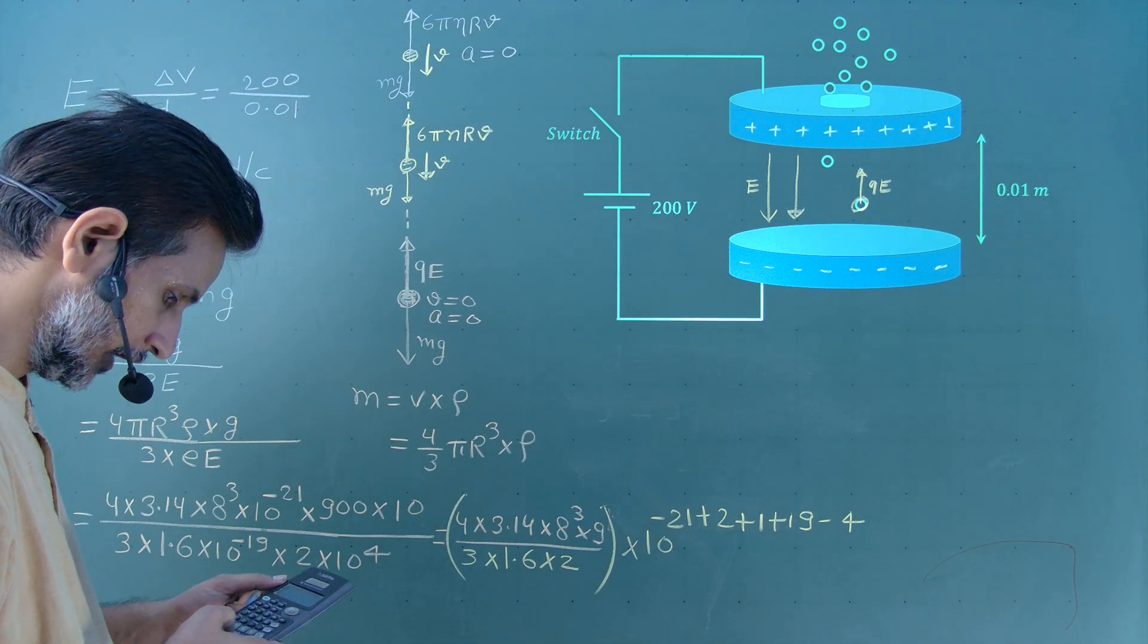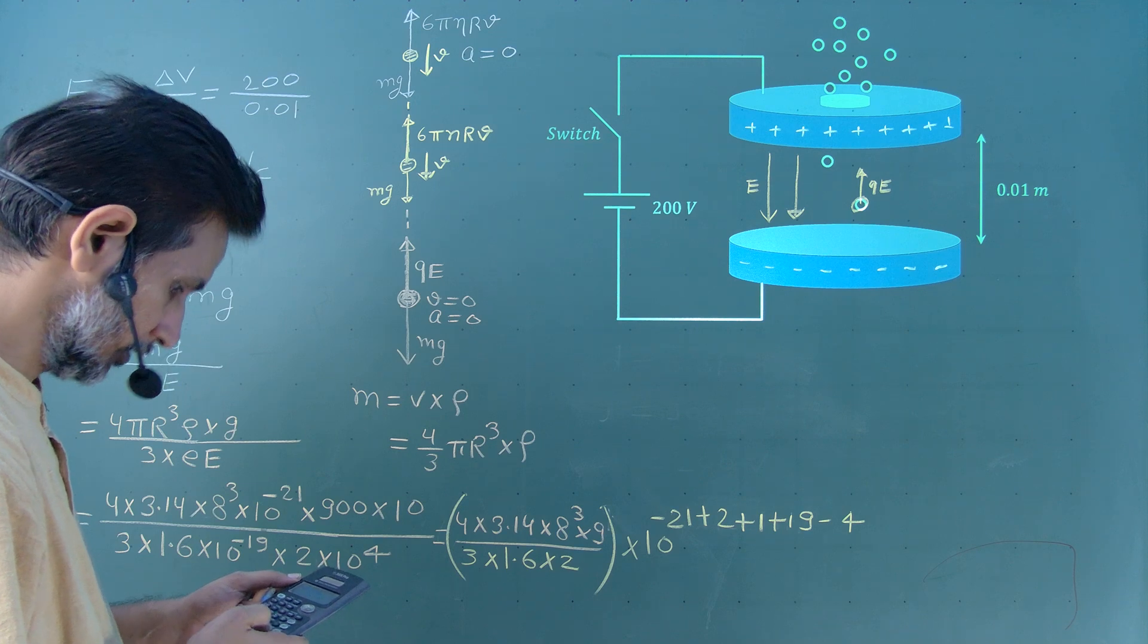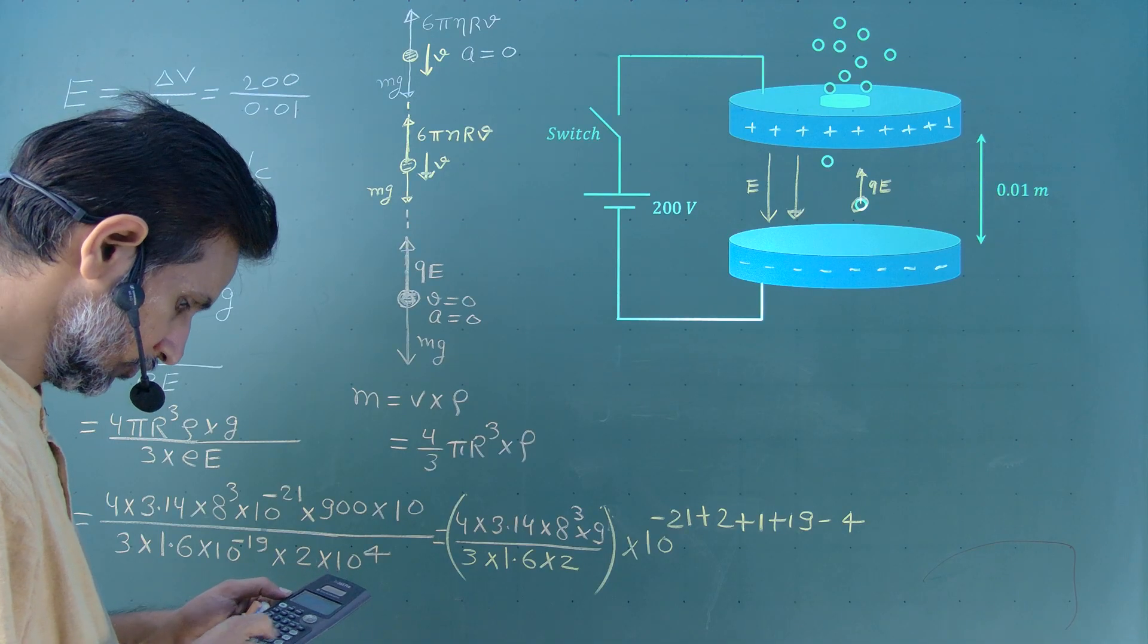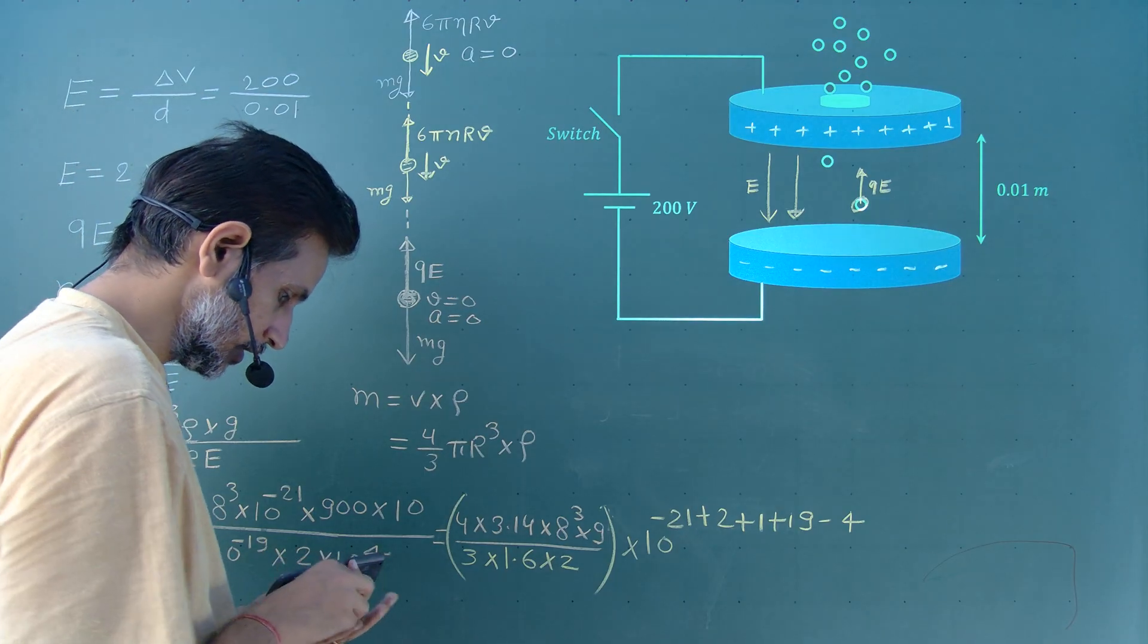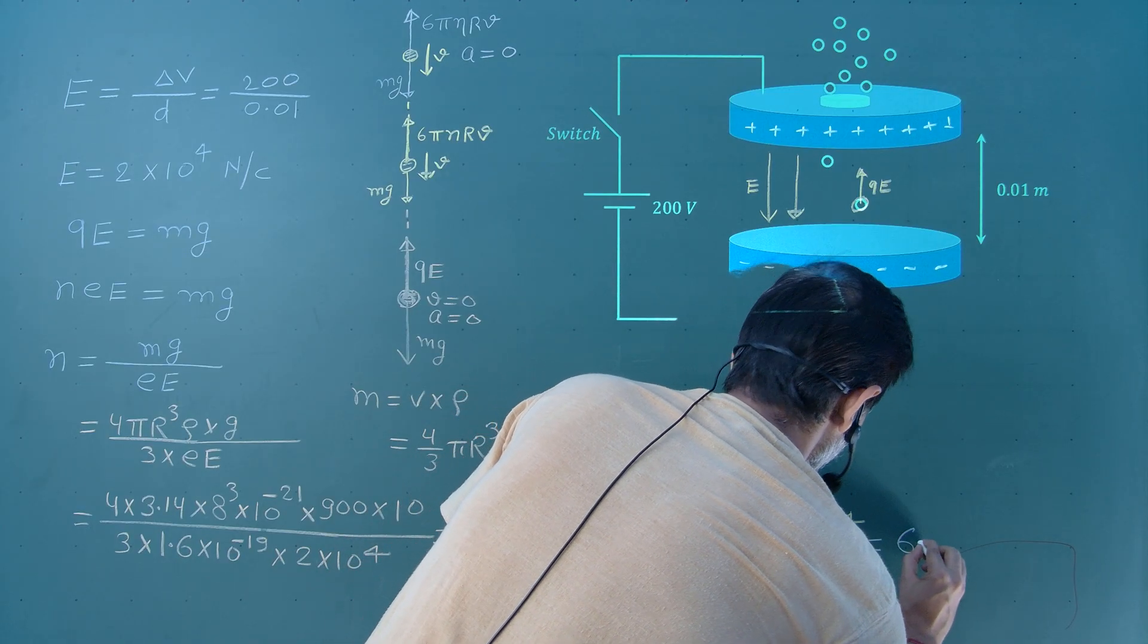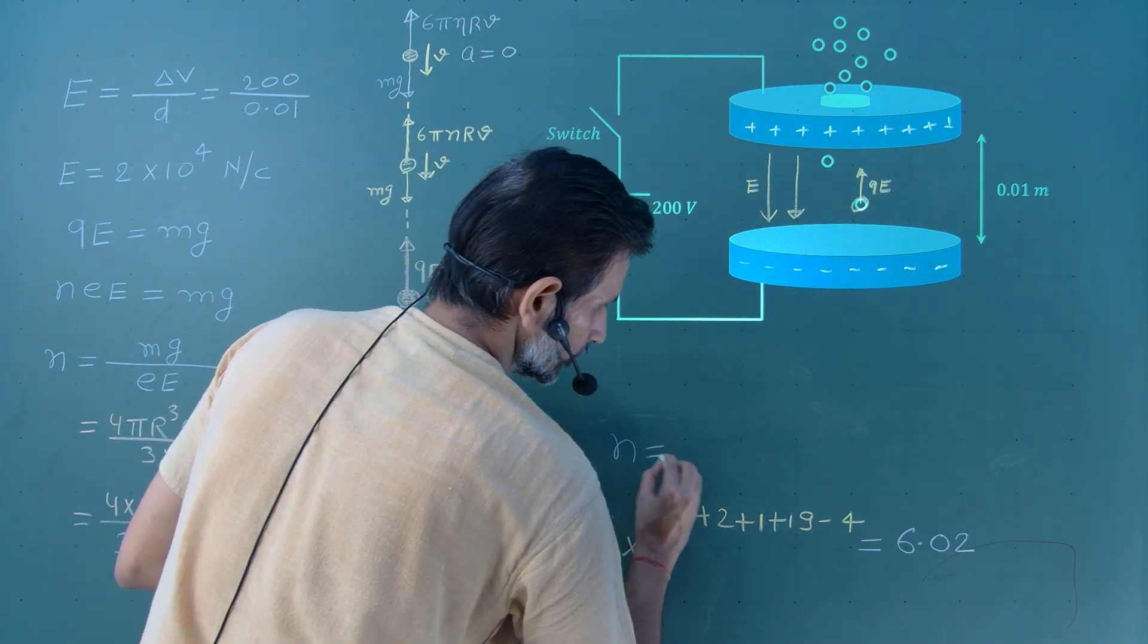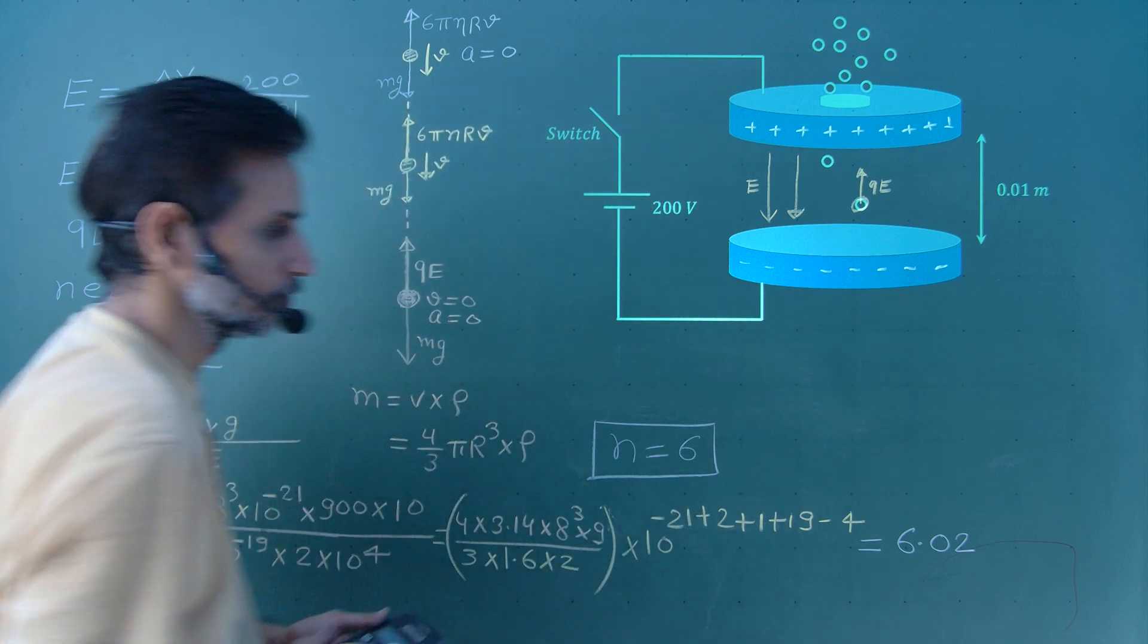Let us calculate the value of this form. To calculate, first I use calculator but you should calculate manually. 4 into 3.14 into 8 into 8 into 8 into 9 divided by 3 into 1.6 into 2. This comes about 6.02. So, the number of electrons n should be equal to 6, nearest integer. So, n should be equal to 6.